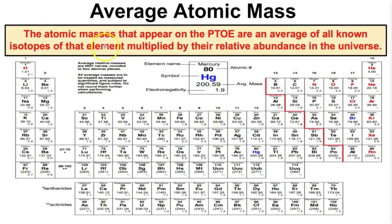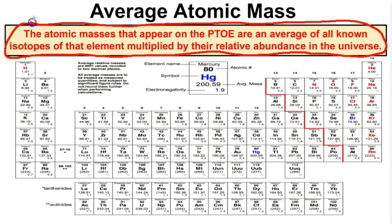Let's take a look at the periodic table first. The atomic masses that you see on the periodic table of elements are the averages of all the known isotopes of that given element multiplied by their relative abundance in the universe. On the bottom of each little box you're going to see this little number — the average atomic mass. This is the average of all the known isotopes of hydrogen multiplied by their relative abundance. We have 6.94 for lithium — that is going to be the average of all known isotopes of lithium multiplied by their relative abundance.